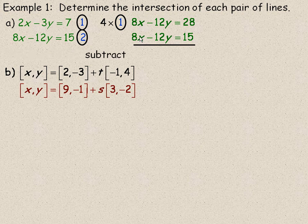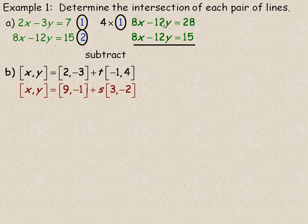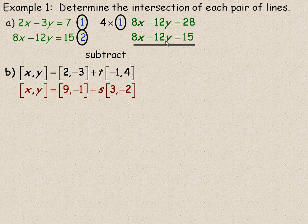8x minus 8x is nothing, or 0x. Negative 12y minus negative 12y, same as negative 12y plus 12y. And so you actually get 0y here, and 28 minus 15 is 13.